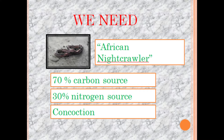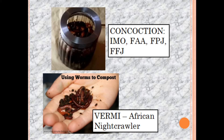For the materials, we are going to collect carbon source materials and nitrogen source materials, and we can also use concoctions. For the concoction, we can use indigenous microorganism, fish amino acid, fermented plant juice, or fermented fruit juice. Dilute two tablespoonfuls in one liter of water and apply this to our substrate.